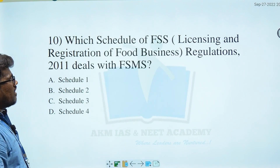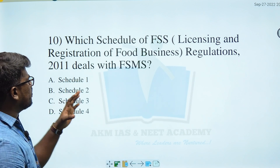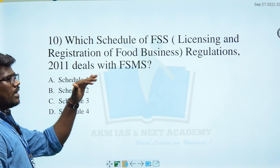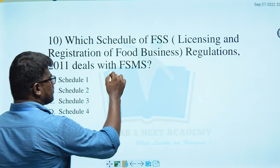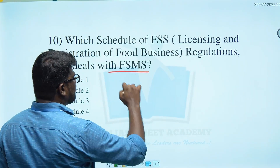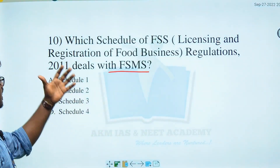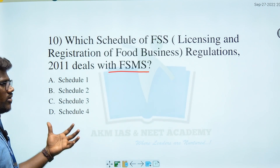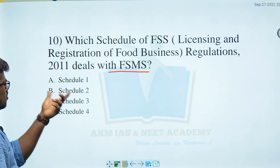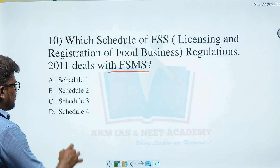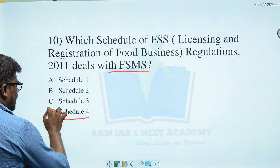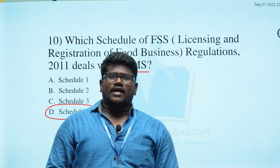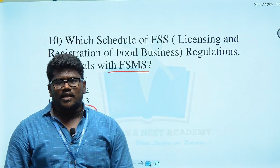Which schedule of the FSS Licensing and Registration of the Food Business Regulations 2011 deals with FSMS — Food Safety Management System? Options: Schedule 1, 2, 3, or 4. Schedule 4 is the right answer. That completes all 10 questions in this set.